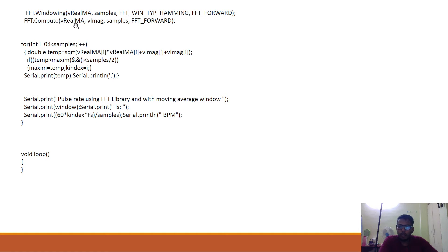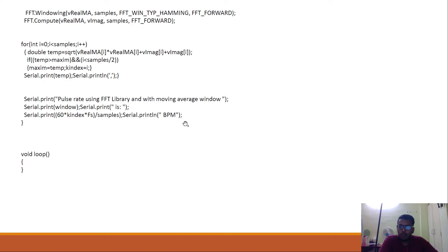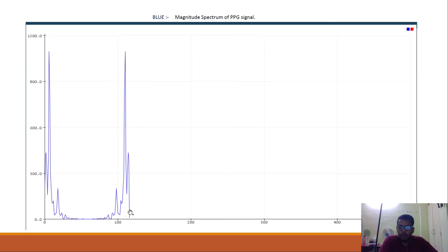We pass Vreal_MA, which is the output of the moving average filter and is free from high-frequency noise, along with the imaginary part. The real array stores the real part of the FFT and the imaginary array stores the imaginary part of the frequency spectrum. The samples parameter and FFT_FORWARD indicate the direction of computation — FFT_BACKWARD would compute the inverse. Then we take the magnitude spectrum, and simultaneously calculate the maximum value and the k-th index. We print the magnitude spectrum and store the BPM. Plotting this, we see the resulting spectrum.